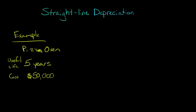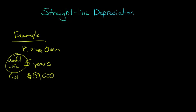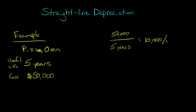Now we have to think about this $50,000 — how are we going to spread that cost over the useful life of the asset? One way to do it is to evenly spread it. We just take this $50,000 cost and divide it by the number of years we're going to use the asset — five years. That means we use up $10,000 a year of this asset.